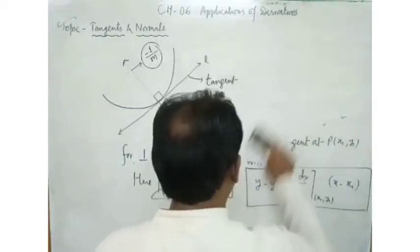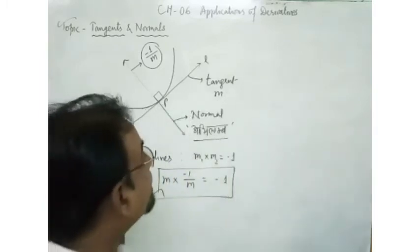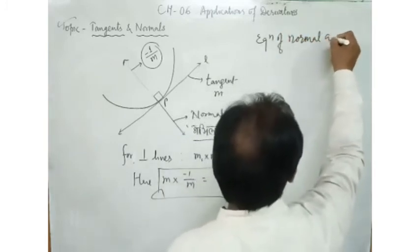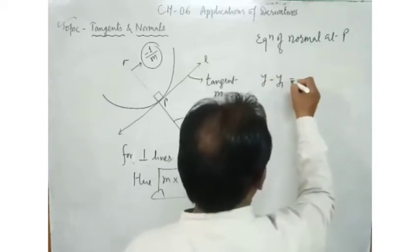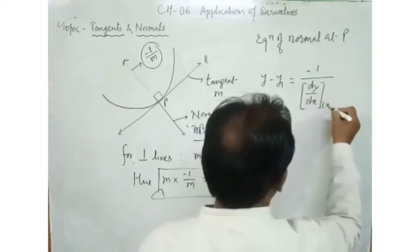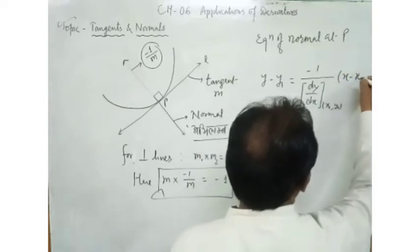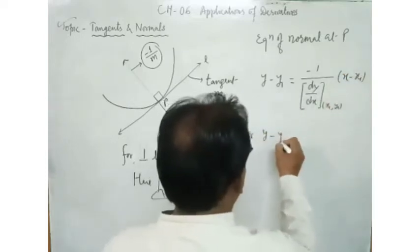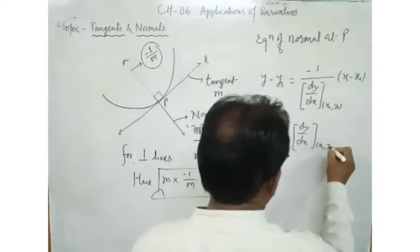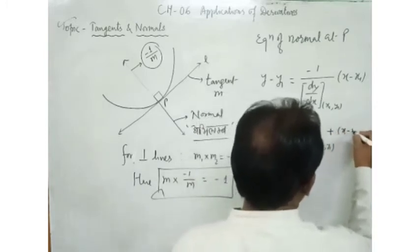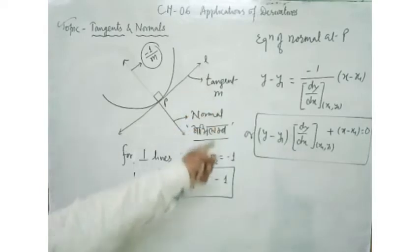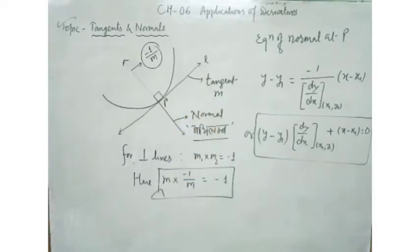तो normal की — जब slope पता चल रही हो और point common है — equation of normal at P will be: y − y₁ = (−1/M)(x − x₁), or equivalently y − y₁ = −1/(dy/dx at x₁,y₁) · (x − x₁). इसको आप ऐसा भी लिख सकते हैं: (y − y₁) · (dy/dx at x₁,y₁) + (x − x₁) = 0. This is the equation of normal.